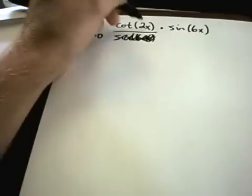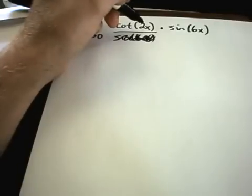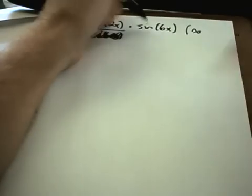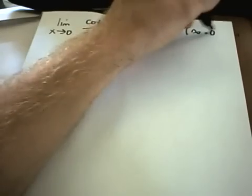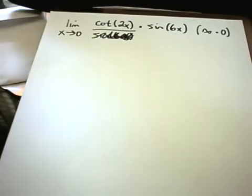As x approaches 0, you'll get cotangent of 0. And if you think about the graph of cotangent, this actually goes to infinity. Sine of 0 is 0. So again, we're getting this indeterminate form, infinity times 0.